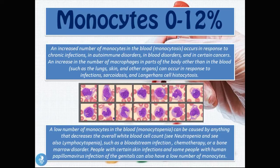An increased number of macrophages in organs such as lungs and skin can occur in response to infections, sarcoidosis, and Langerhans cell histiocytosis. A decreased number of monocytes is called monocytopenia. Since the normal value is 0 to 12 percent, absent monocytes are not automatically pathological. However, causes of monocytopenia include anything that decreases overall white blood cell count — such as bloodstream infection, chemotherapy, or bone marrow disorder — as well as certain skin infections and human papillomavirus infections.